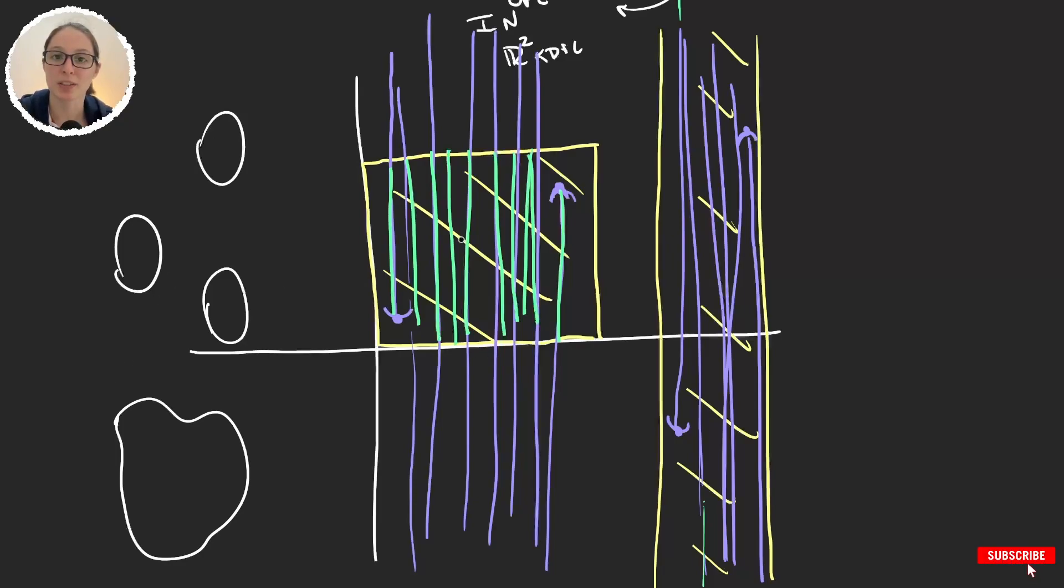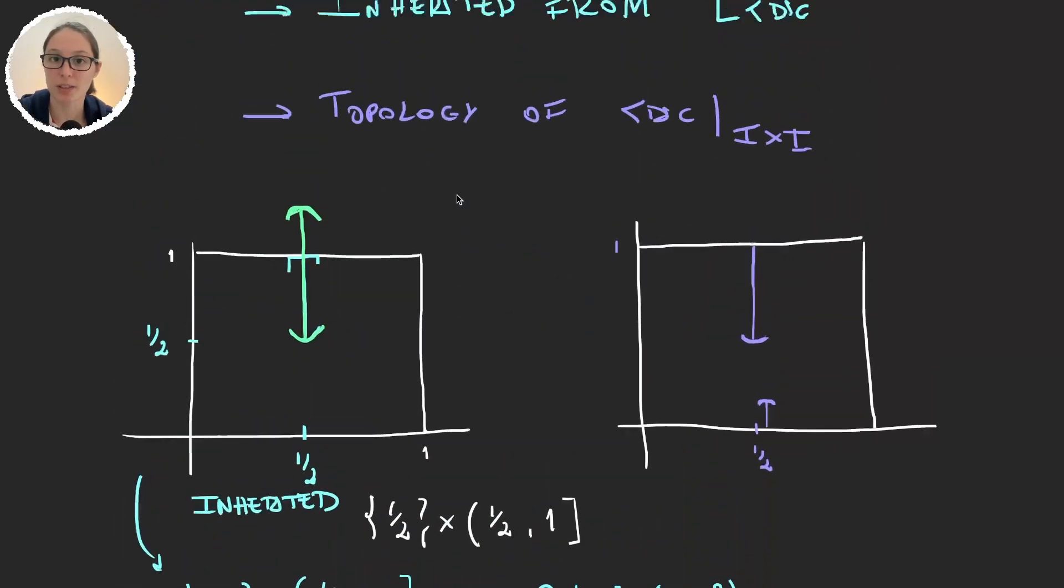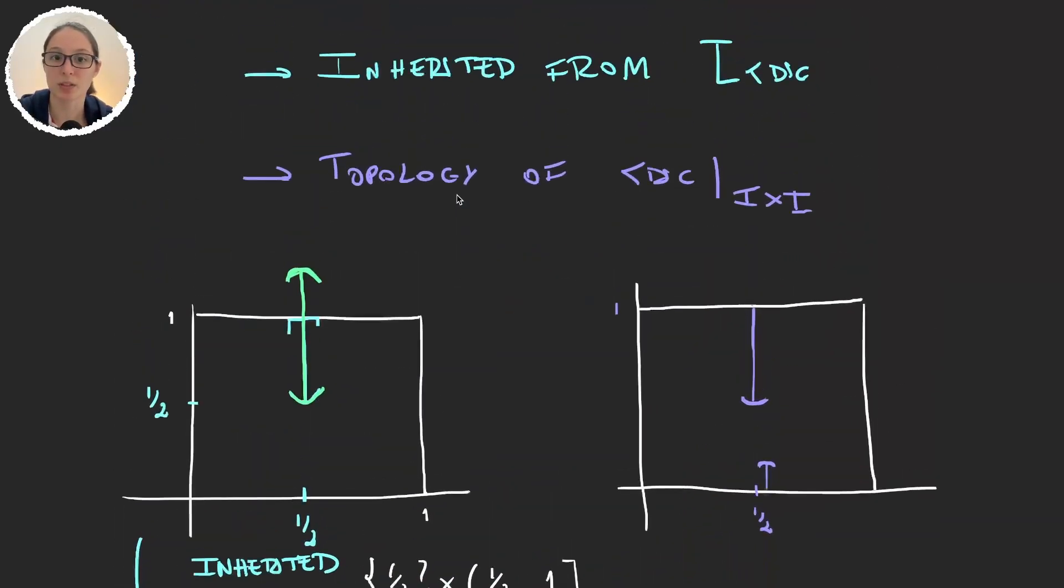And the unit square, it seems like it only has one part, but when you draw the intervals, you realize it doesn't. So, maybe, the reason why these two topologies are different is because we're working with the unit square, and the unit square is not convex.